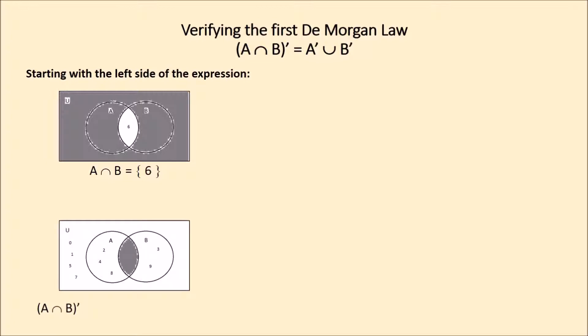The Venn diagram shows the numbers that are not in the intersection area. The numbers that can be read are 0, 1, 2, 3, 4, 5, 7, 8, 9.